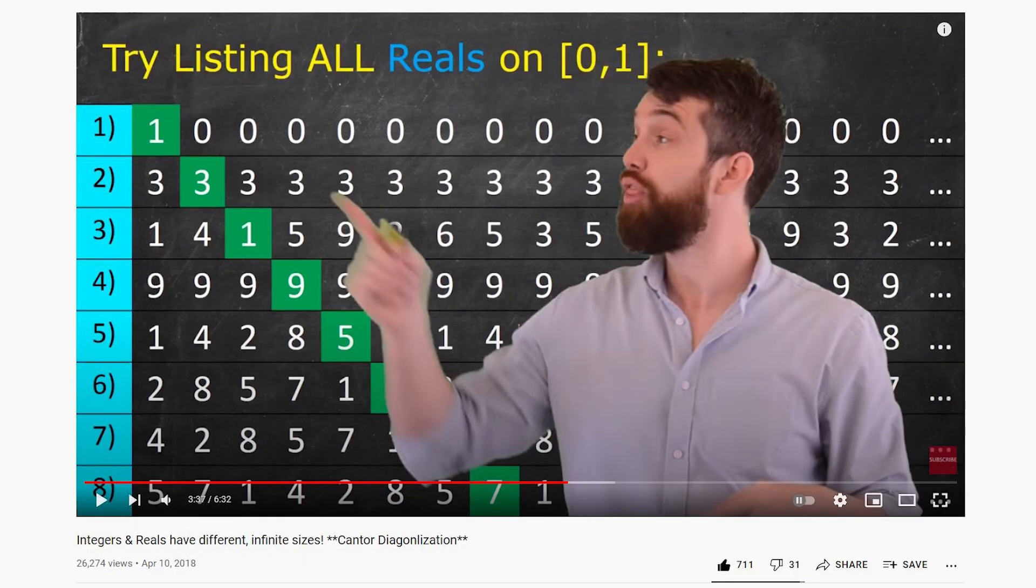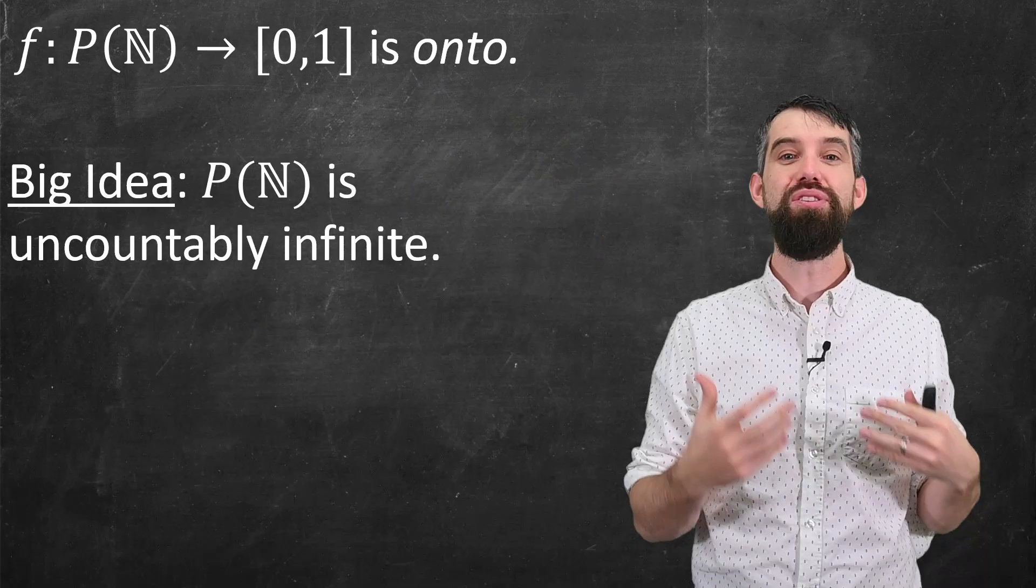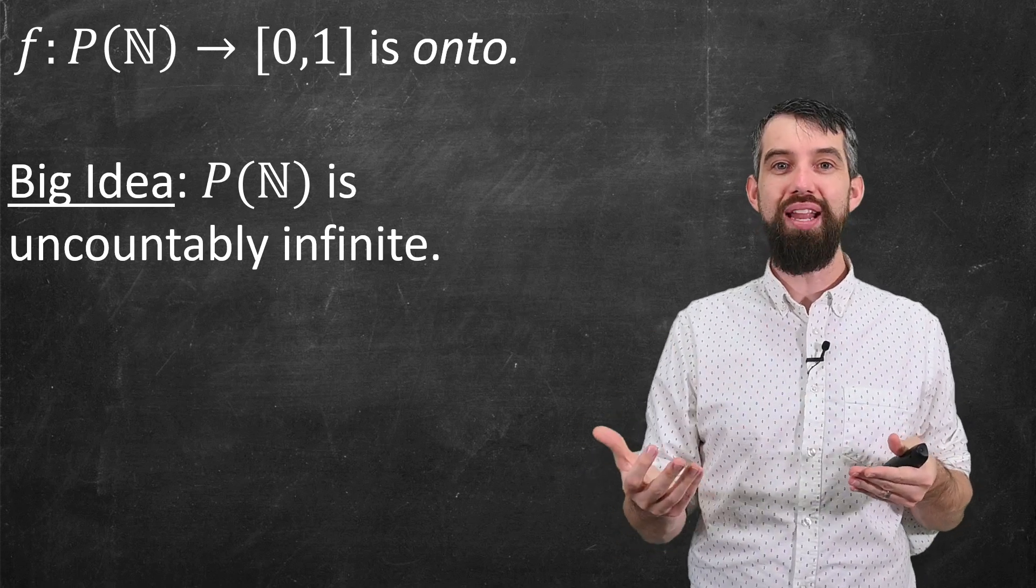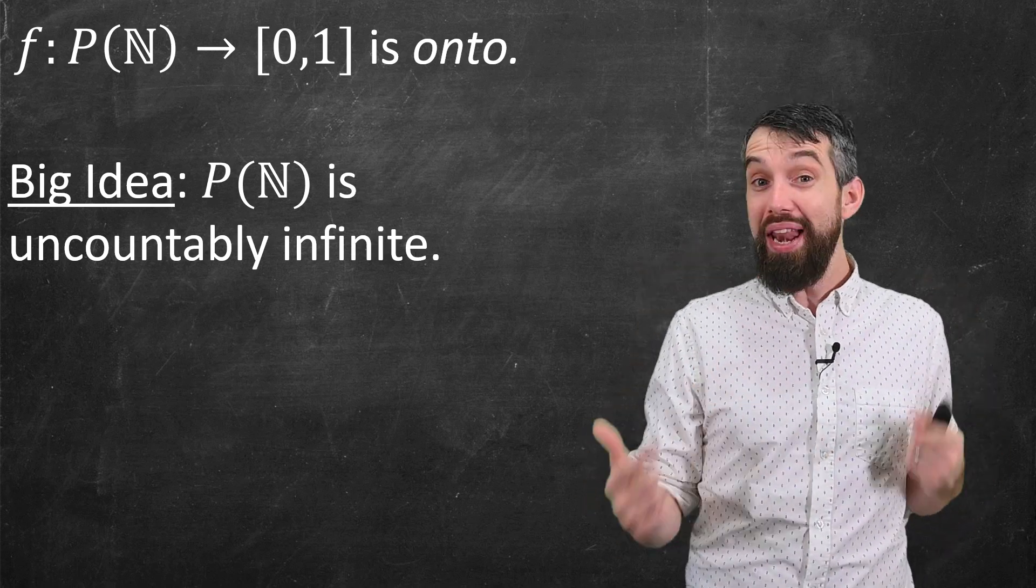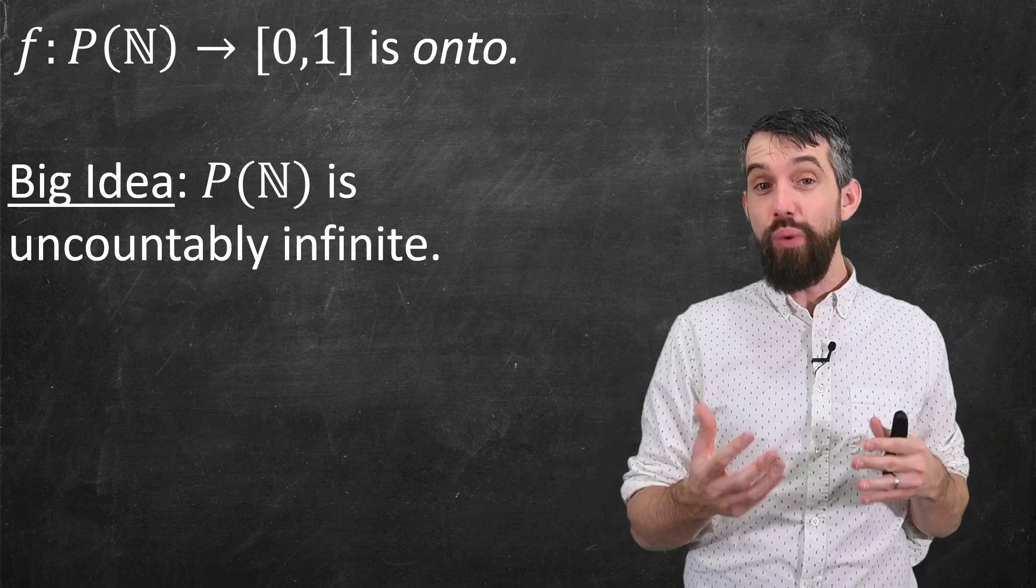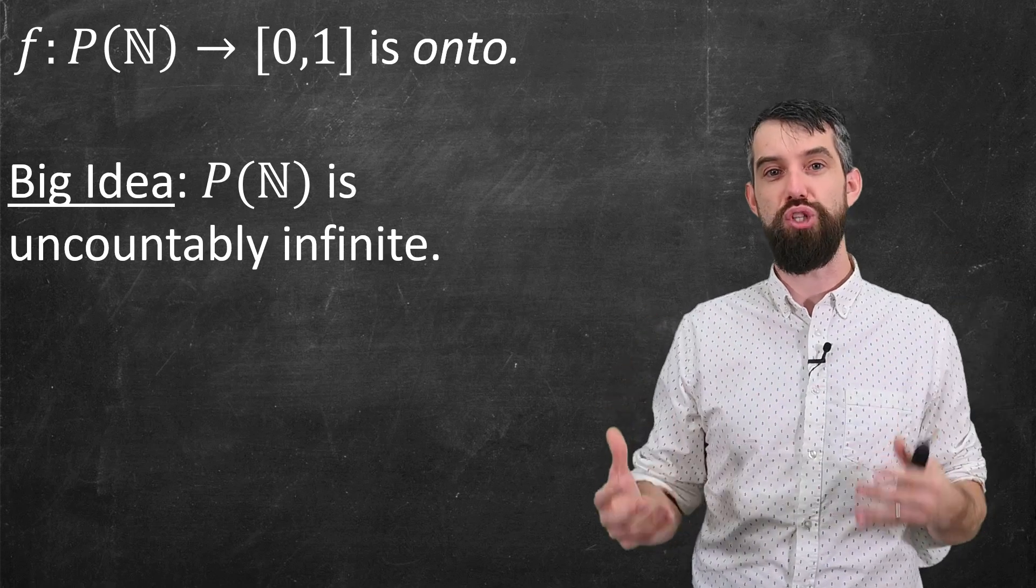I actually recorded an entire video on exactly this topic previously. It uses Cantor's diagonalization to demonstrate that [0, 1] is uncountable. There's no way to have what we call in mathematics a bijective correspondence between the natural numbers and this interval [0, 1].